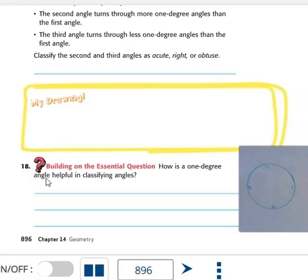How is a one-degree angle helpful in classifying angles? As we talked about, we can tell by how many numbers, how high the number is in the degree, how wide open the circle is. The more numbers, the wider that angle will be. So an obtuse angle is going to have a very large number of degrees, and an acute will have less than that. Hopefully that helps you answer in your own words number eighteen.